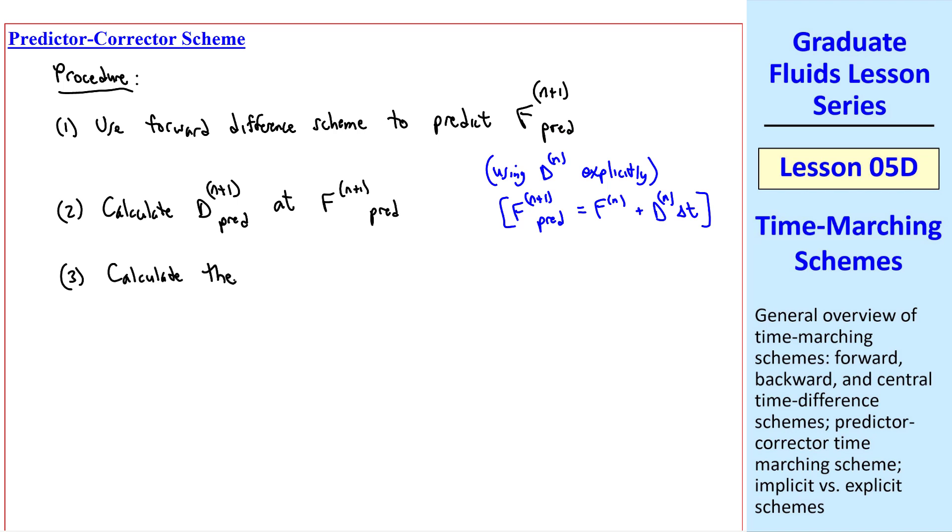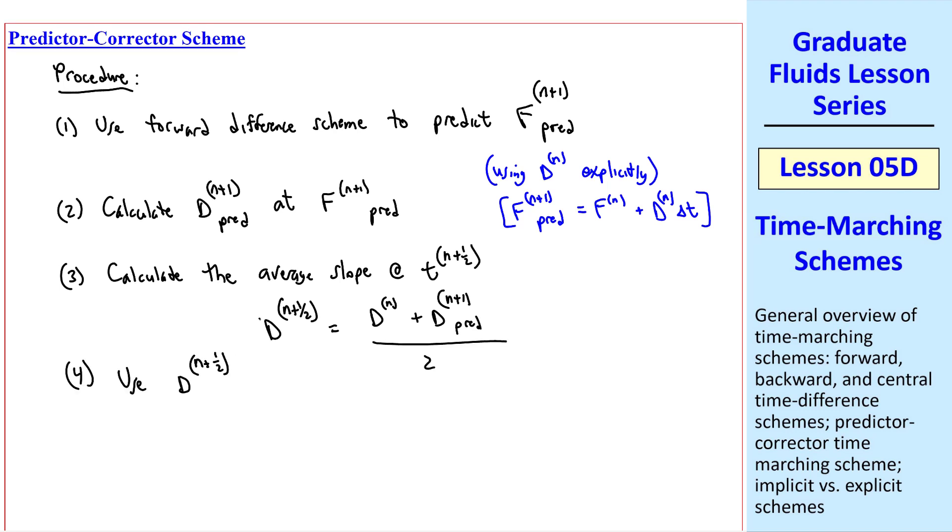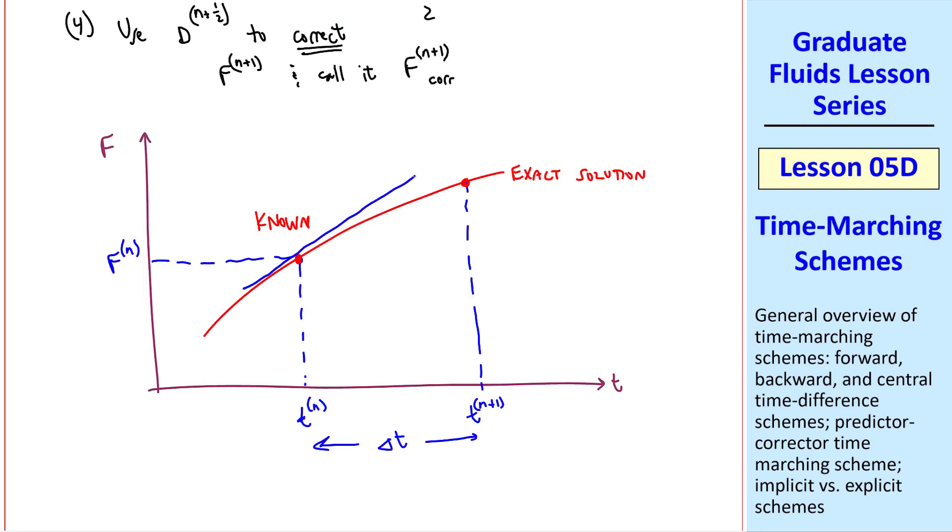Step 3 is to calculate the average slope at tn plus 1 half, namely dn plus 1 half equal dn plus dn plus 1 predicted over 2. And then step 4, use this dn plus 1 half to correct fn plus 1, and we'll call it fn plus 1 corrected, with subscript c-o-r-r. Again, this is best illustrated graphically. Step 1 is similar to the forward marching scheme. We predict this point for f, which we called fn plus 1 predicted. Now we calculate the slope at that point, we call that dn plus 1 predicted, the predicted derivative at this point, and at tn plus 1.